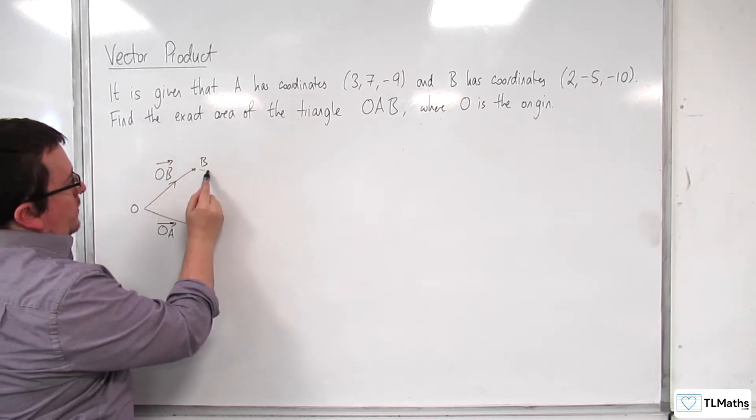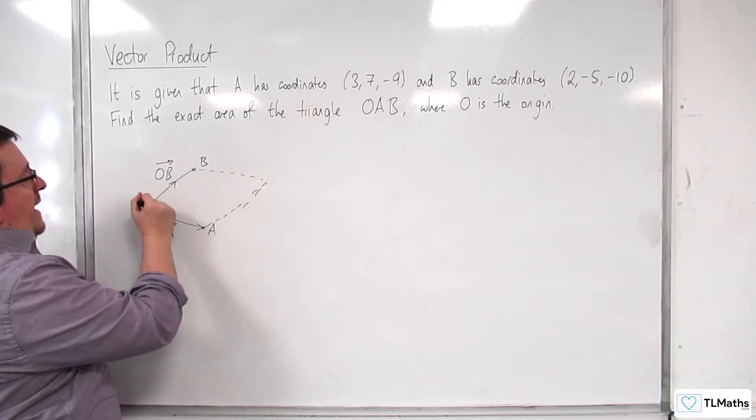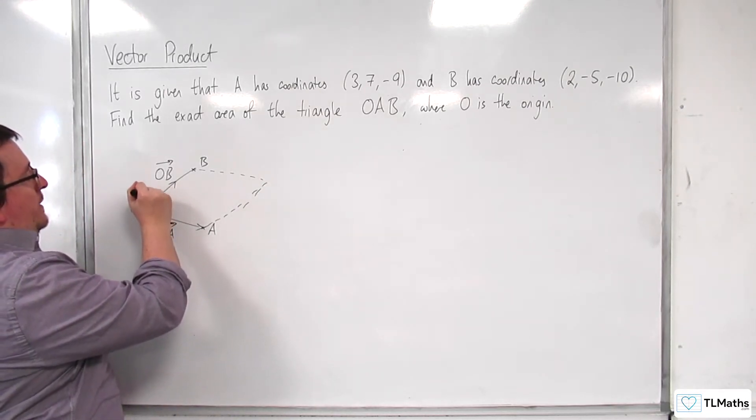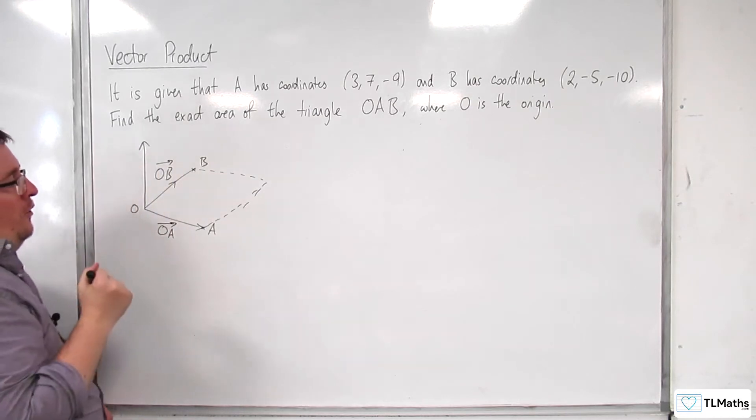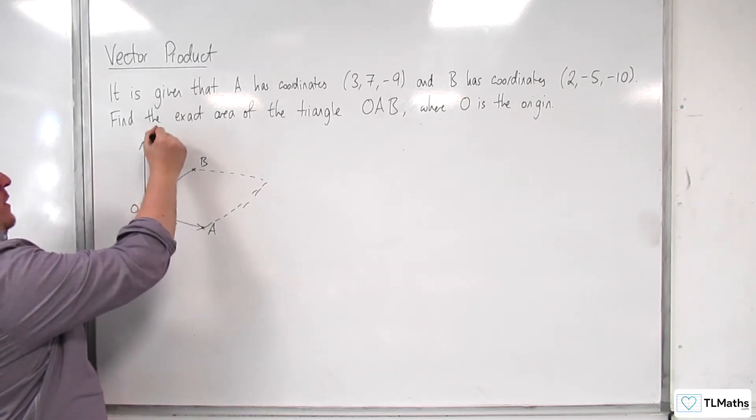Well, if you looked at the area of this parallelogram, then the area of that parallelogram is the length of the vector, the cross product of OA and OB.